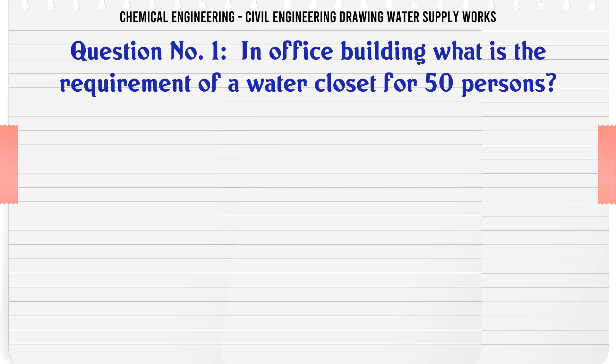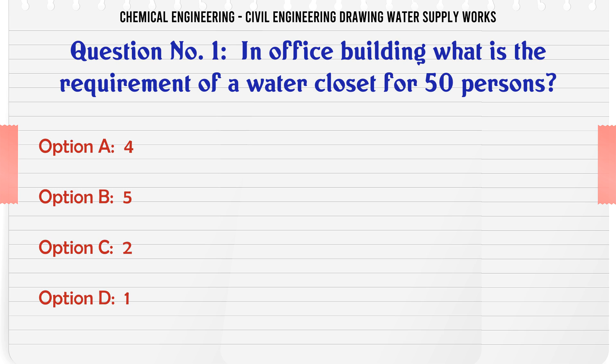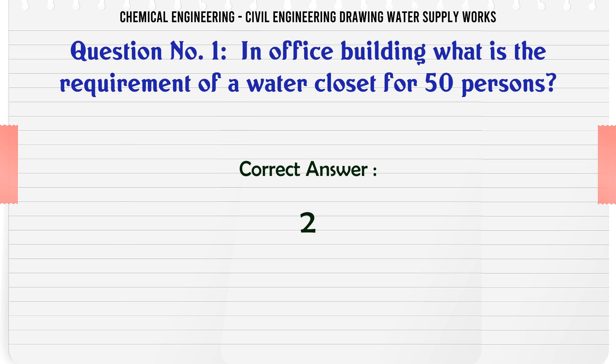In an office building, what is the requirement of a water closet for 50 persons? A. 4, B. 5, C. 2, D. 1. The correct answer is 2.